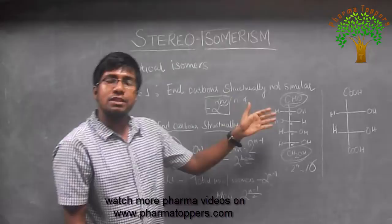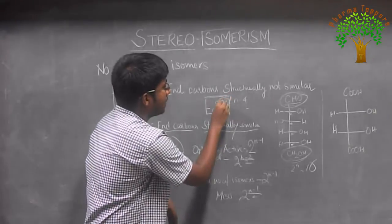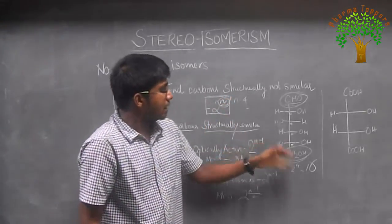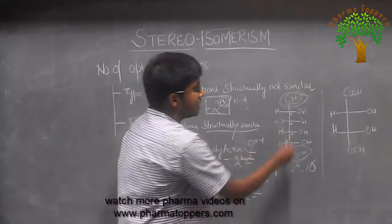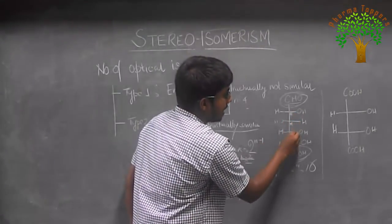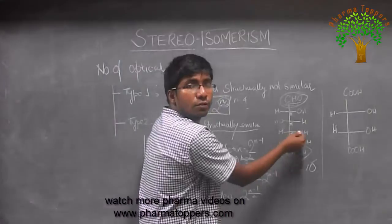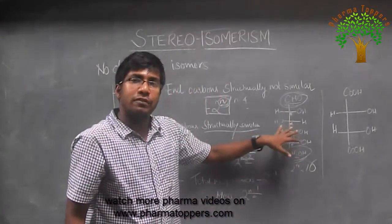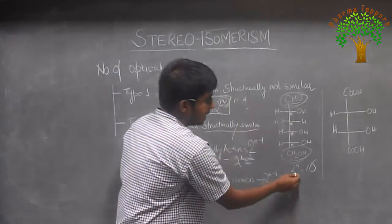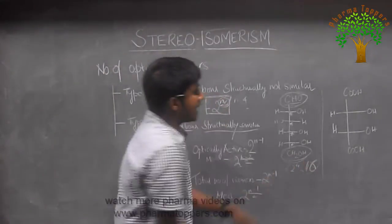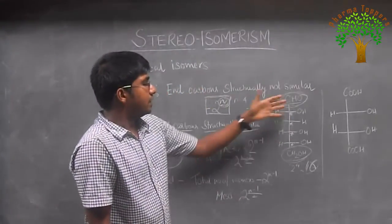The number of isomers in this case will be given by the simple formula 2 to the power n, where n is the number of chiral centers or asymmetric centers exhibited by this compound. Glucose has 4 different chiral centers — each carbon is attached to 4 different groups. So the number of optical isomers exhibited by glucose is 2 to the power 4, which is 16.